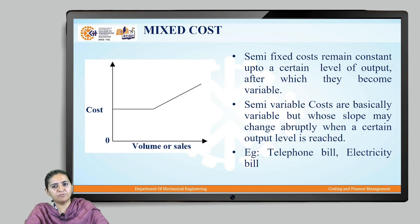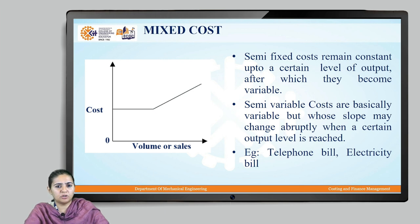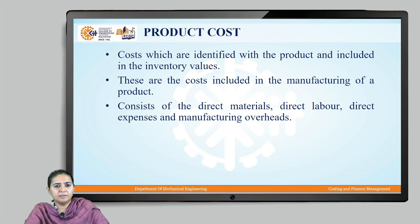Mixed cost can be semi-fixed or semi-variable. Semi-fixed costs remain constant up to a certain level of output and after that become variable. Semi-variable costs are basically variable but whose slope may change abruptly when a certain output level is reached. The best example of mixed cost is the electricity bill or telephone bill, which initially remains fixed for certain units of usage and later changes as usage increases.